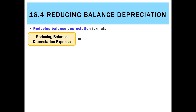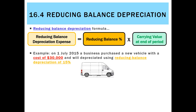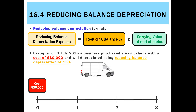The formula for reducing balance is actually quite simple. We take the reducing balance percentage — which for us is 15% — and multiply it by the carrying value at the end of the period. Going back to unit three, the carrying value is the asset's cost less the accumulated depreciation. Let's look at the example of the car now, and start at the beginning.